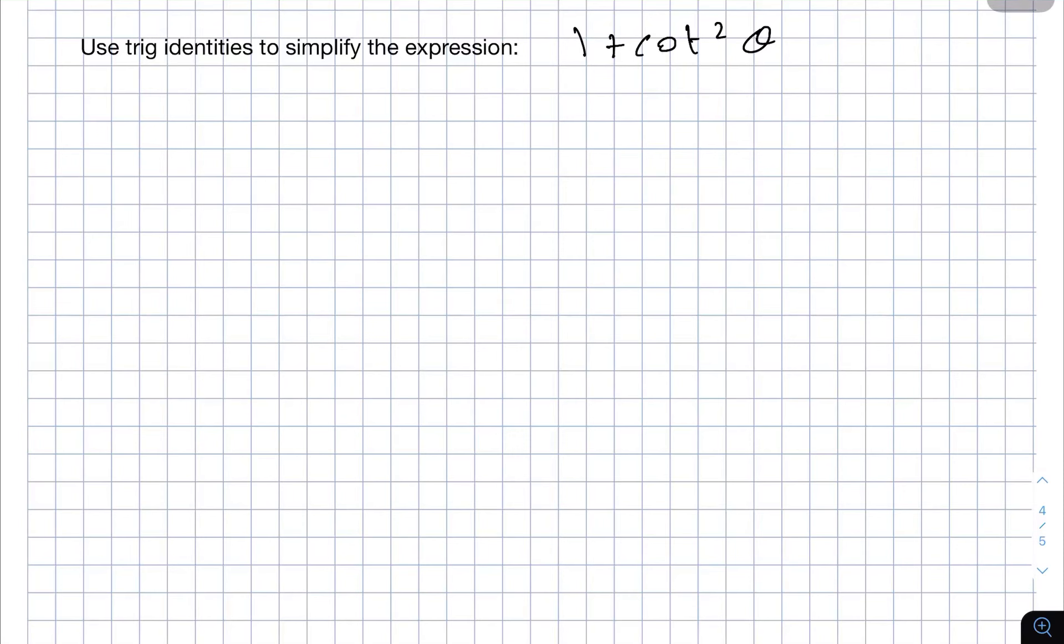Hello everyone, welcome to Explorer Hub. Today we will use trig identities to simplify the expression 1 + cot²θ. So we have the identity 1 + cot²θ.